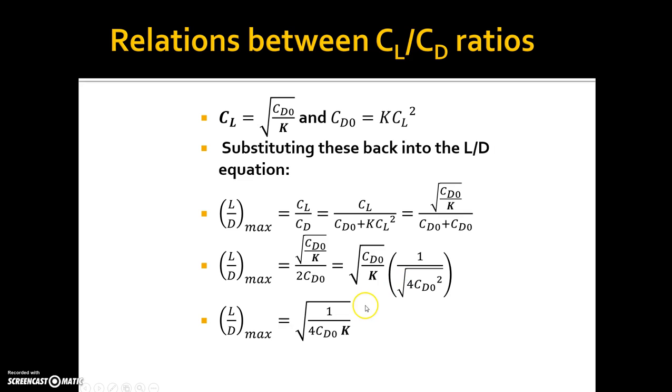Alright so I take that, if I have the square root of CD0 and the square root of CD0 squared these will cancel out into one another. So I get 1 over square root of 4CD0 K. So that is when my lift to drag is at its max.